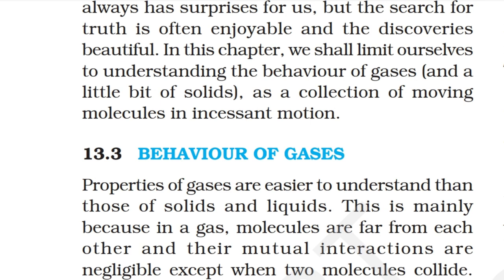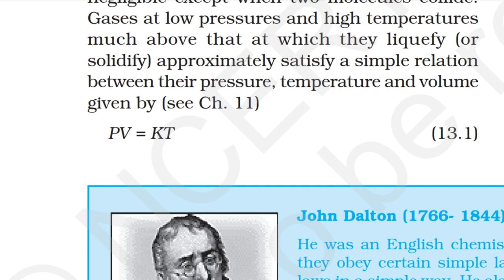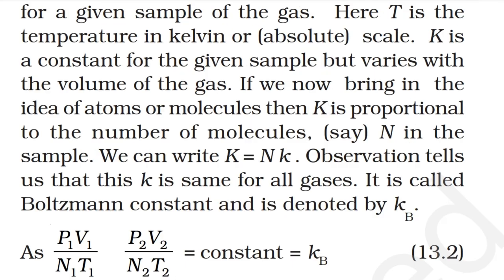The properties of a gas are easier to understand than those of solids and liquids, mainly because in a gas molecules are far from each other and their mutual interactions are negligible except during collisions. Gases at low pressure and high temperature approximately satisfy a simple relation: PV = kT for a given sample of gas, where T is the temperature in kelvin. If we bring in the idea of atoms or molecules, k is proportional to the number of molecules N in the sample, so we can write k = NkB.